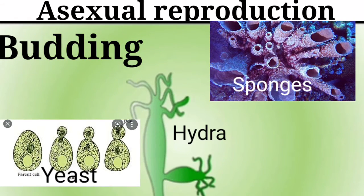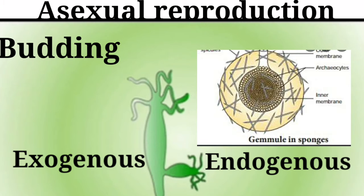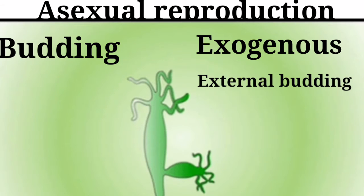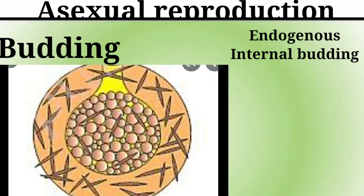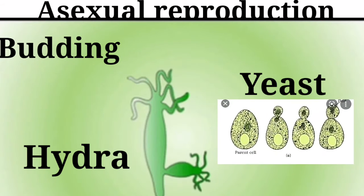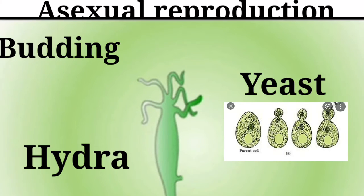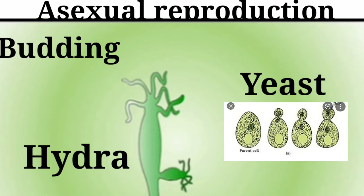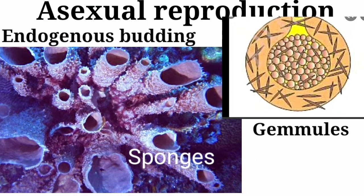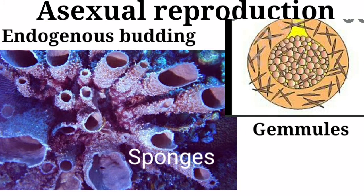There are two types of budding: exogenous budding and endogenous budding. Exogenous budding is external budding and endogenous budding is internal budding. In yeast and hydra, the division is unequal and small buds are produced that remain attached initially to the parent cell, which eventually gets separated and matures into new cells. This is called exogenous budding. In marine sponges, buds are produced internally, called endogenous budding.